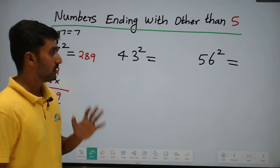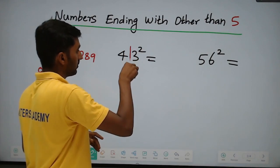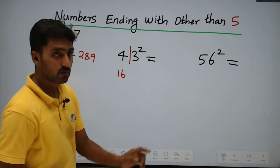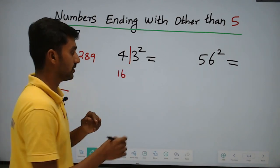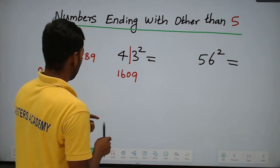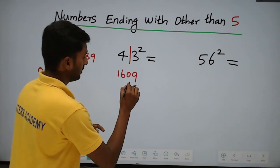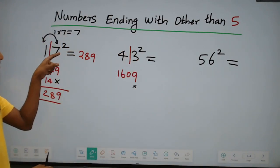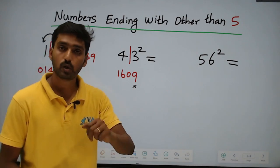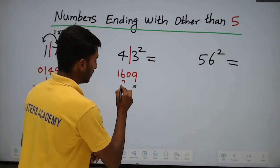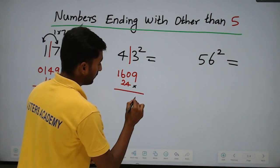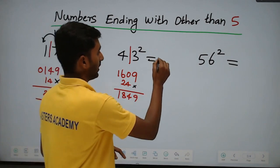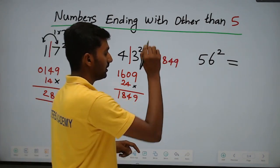Next, 43 squared. Split the digits: 4 squared equals 16, and 3 squared equals 09. Then multiply: 4 into 3 equals 12, double it to get 24. Adding the parts together: result is 1849. So 43 squared equals 1849.